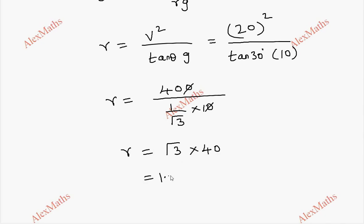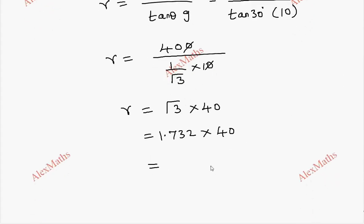Root 3 is 1.732 into 40. This is 4 times 8 is 32, 4 times 3 is 12 carry over. 7 times 4 is 28, 29. This is 2, 4 ones are 4 plus 2 is 6. 3 decimal places.